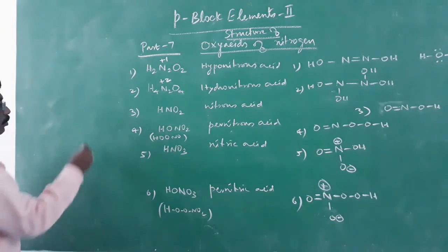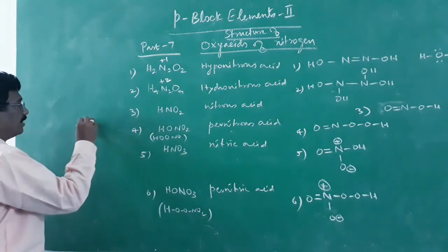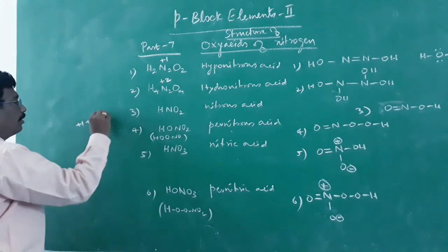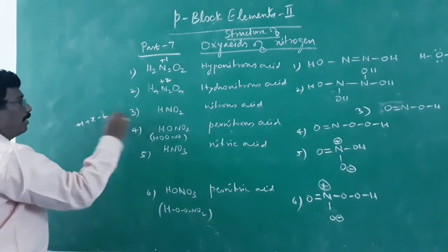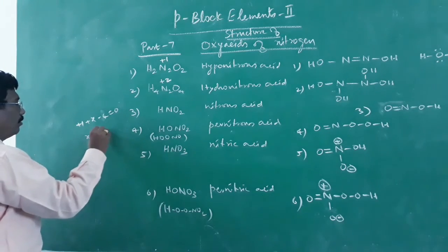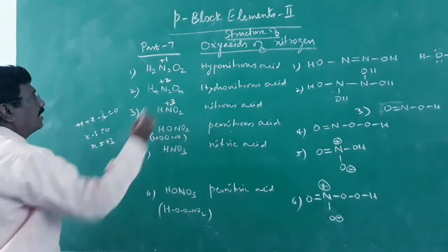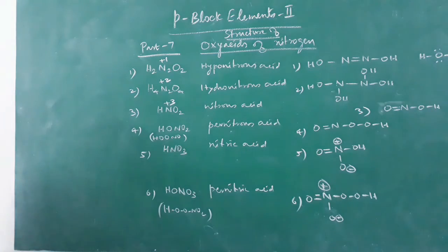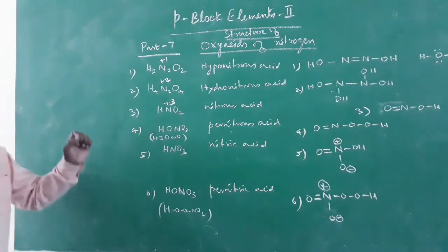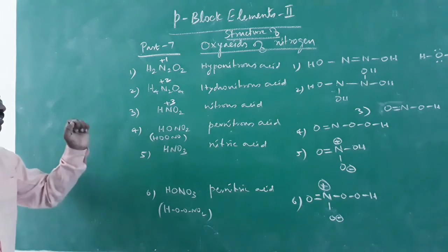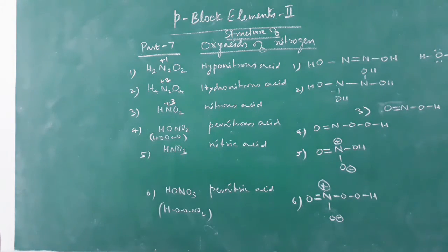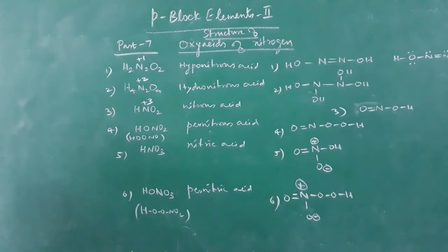For nitrous acid HNO2: (+1) + x + 2(−2) = 0, so x − 3 = 0, x = +3. The oxidation state of nitrogen in nitrous acid is +3. For pernitrous acid, we have to think in a slightly different manner.